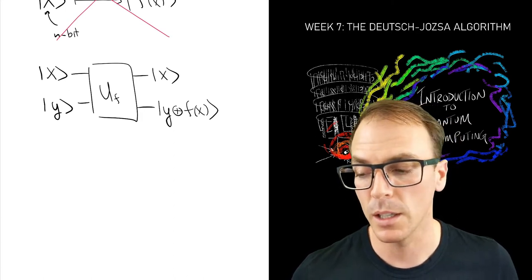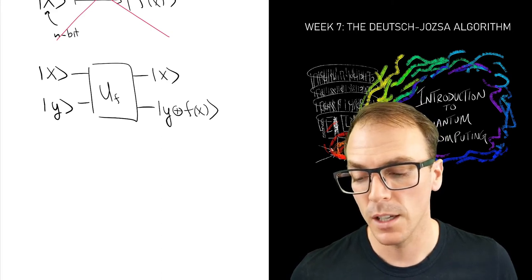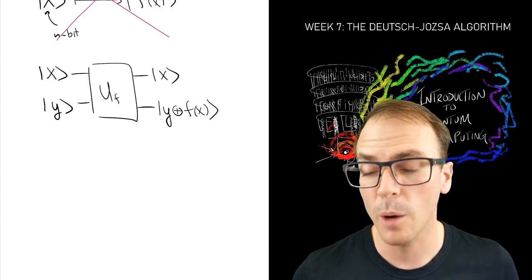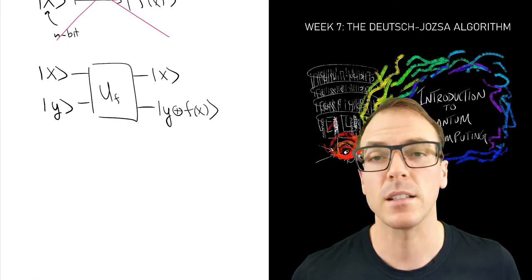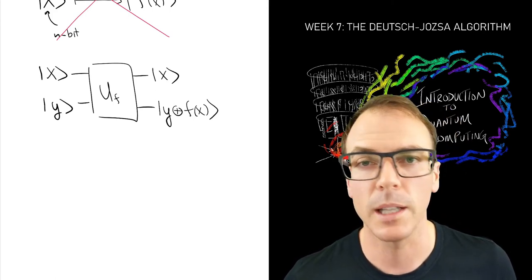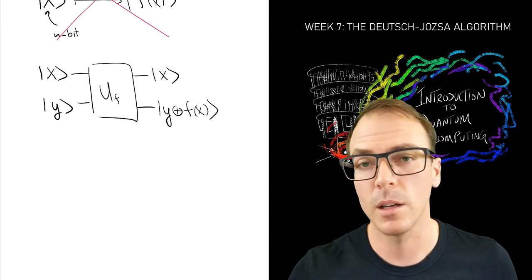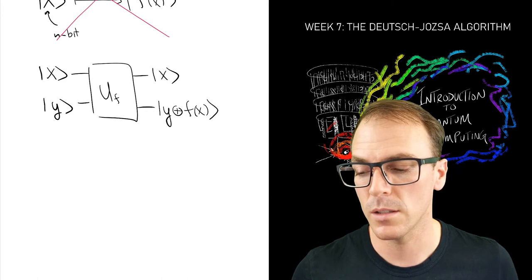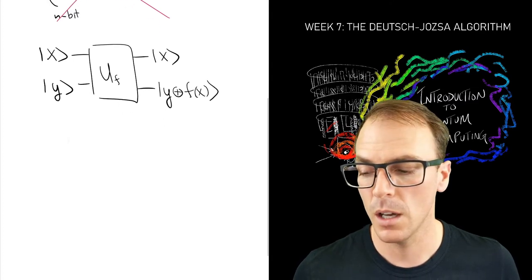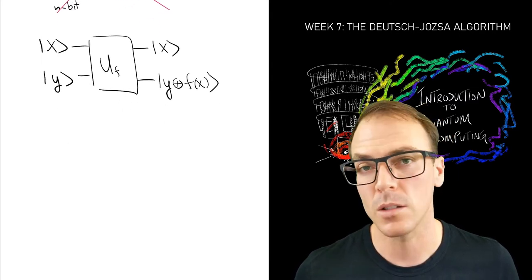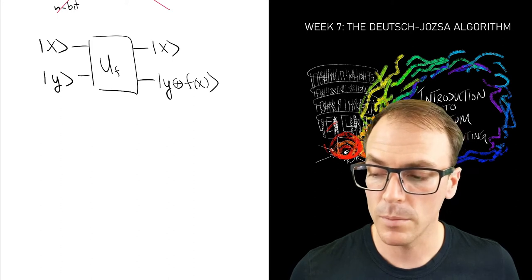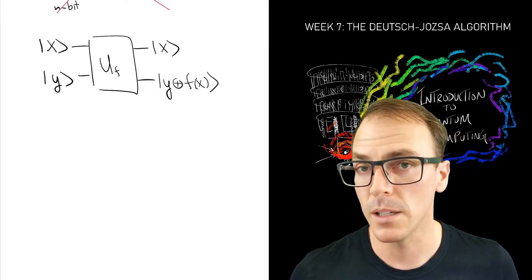You might be wondering: if f is the identity function, then I've copied the state x — doesn't the no-cloning theorem forbid this? Remember from the no-cloning theorem that it's perfectly fine to copy an entire basis. This is something we can do. We'll show explicit examples of circuits that implement constant and balanced functions. There's no problem with the no-cloning theorem; we're just copying basis states, which is allowed. It's superpositions that we can't copy.